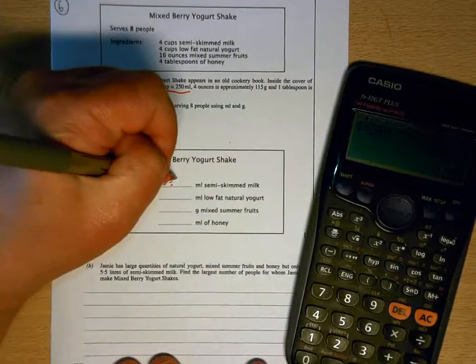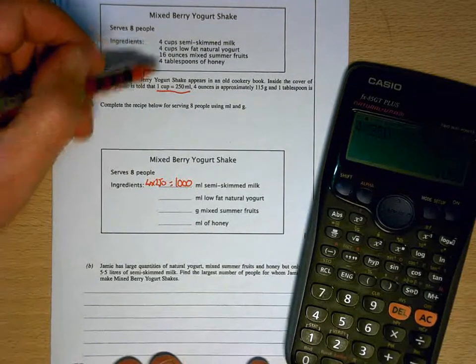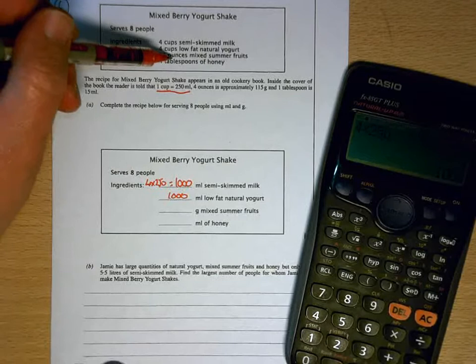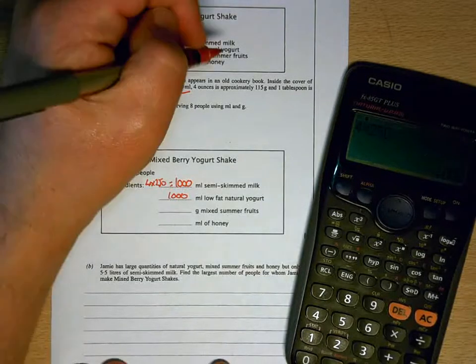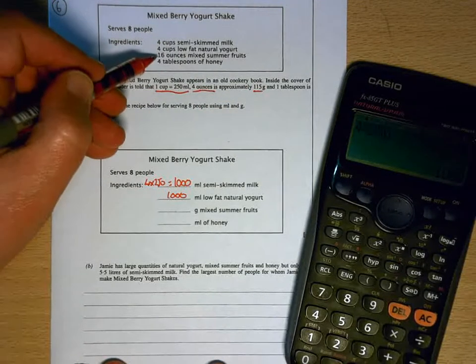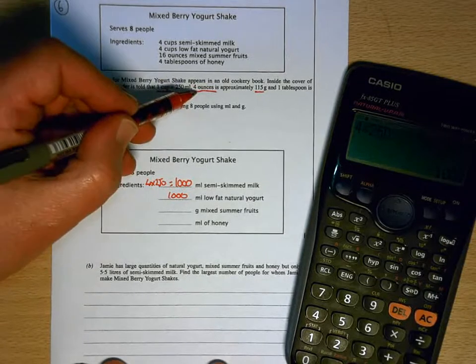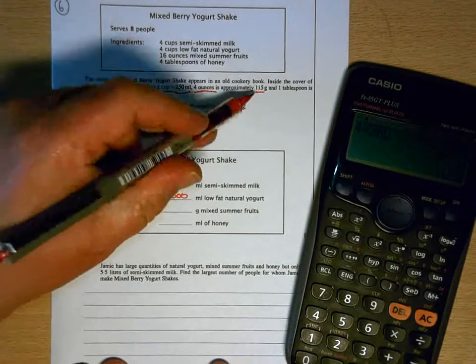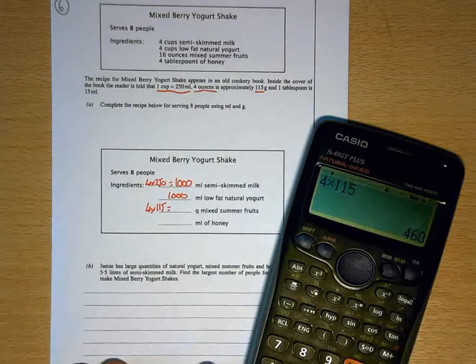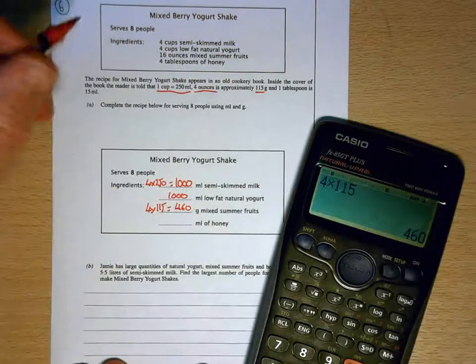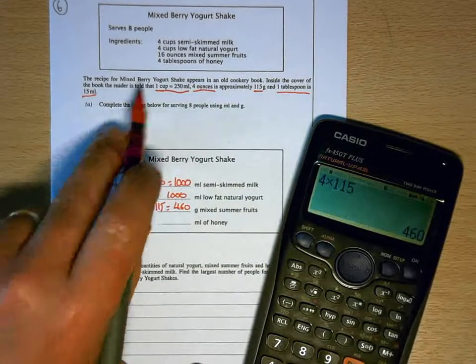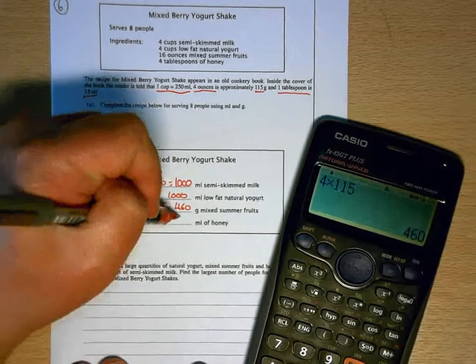Exactly the same for the yogurt. Now for the summer fruits, we need to change ounces into grams, and they're telling us here that four ounces is approximately 115 grams. So if four ounces is 115, I need 16 ounces, so I need four lots of four ounces. So I'm going to be doing four lots of 115 to get that, which is 460 grams of that. And for the honey, four tablespoons, it's saying that one tablespoon is 15 mil, so I need four lots of 15, which is 60 milliliters of honey.